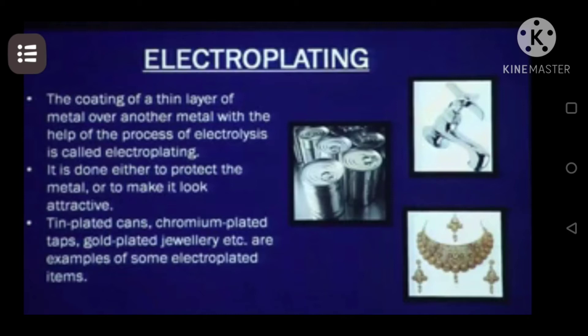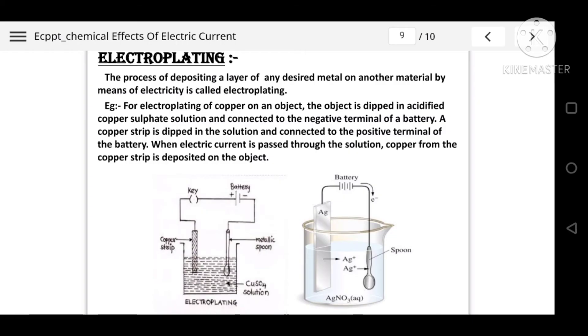Tin plated cans, chromium plated taps, and gold plated jewelry are all examples of electroplated items. Iron objects are often coated with zinc to prevent rusting — that process is known as galvanization. Coating gold on other metals is known as gold plating, and coating silver on other materials is known as silver plating. The material to be coated is taken as the cathode, and the metal to be coated on it is taken as the anode.